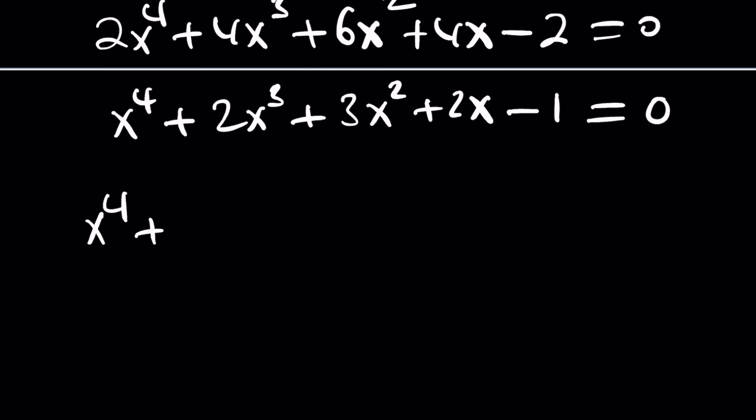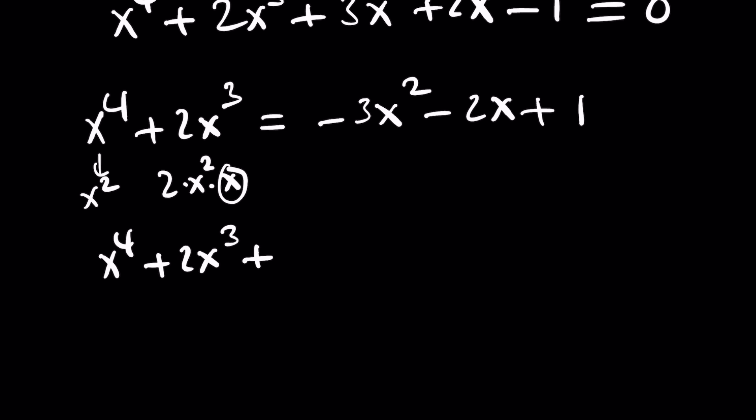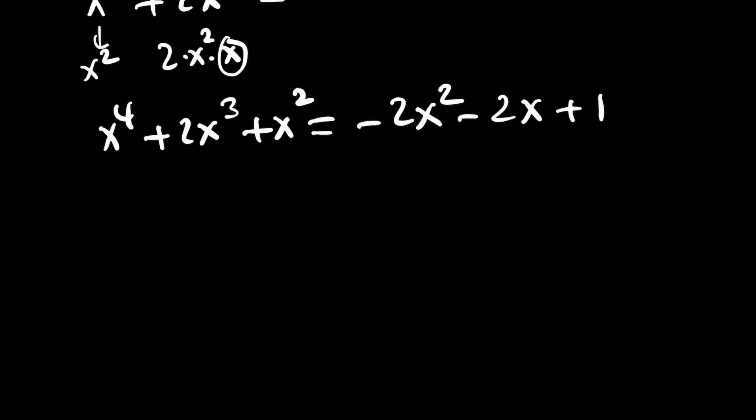I can isolate this and put everything else on the right-hand side. I want the left-hand side to be a perfect square. How do I make it a perfect square? This is x squared. This is 2 times x squared times x. So, if you think about a squared plus 2ab plus b squared, this is your b, so you need to add x squared. I'm supposed to add x squared to both sides, and that'll partially do the trick. The left-hand side will be x squared plus x quantity squared.